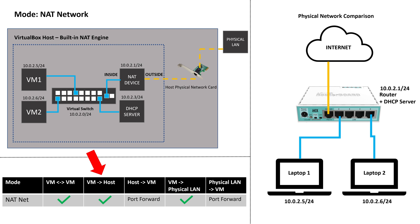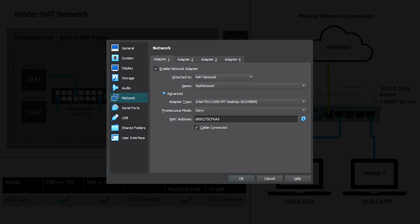The same port forwarding requirements need to be set up if you need to allow a device on the external physical network to access a VM service on the inside virtual network. In terms of a physical network comparison, this is the same as how your home or small office network is set up — the router provides NAT and connects devices to the internet, while each device connects to a physical switch or via Wi-Fi, all on the same subnet. This network mode is useful when you have multiple VMs that need to communicate with each other within their own virtual network and still have access to the internet.